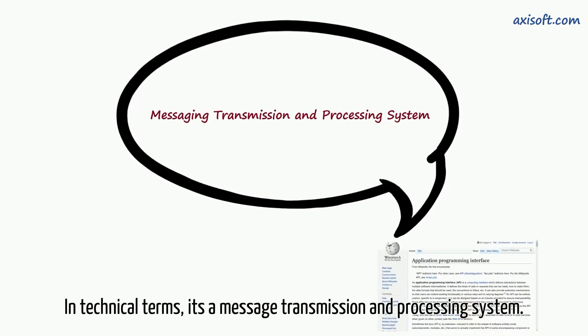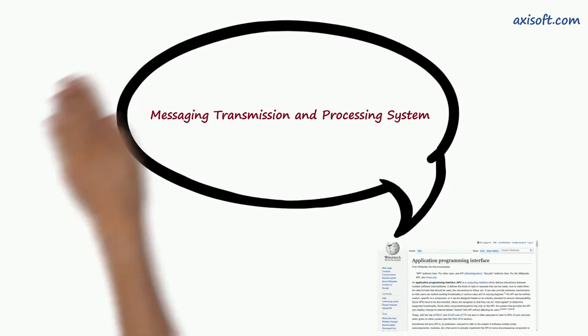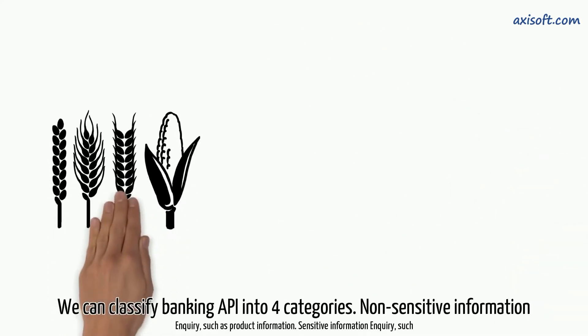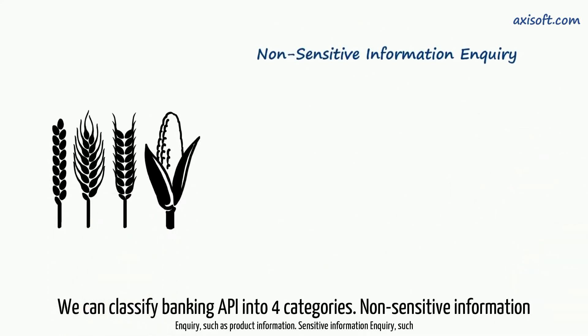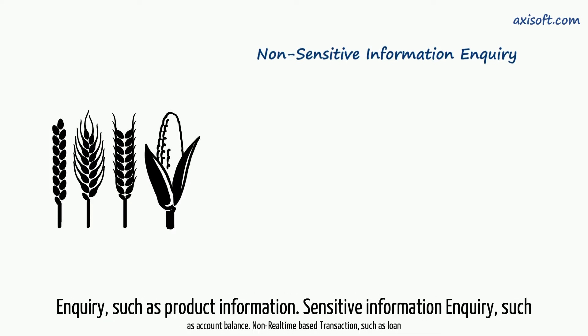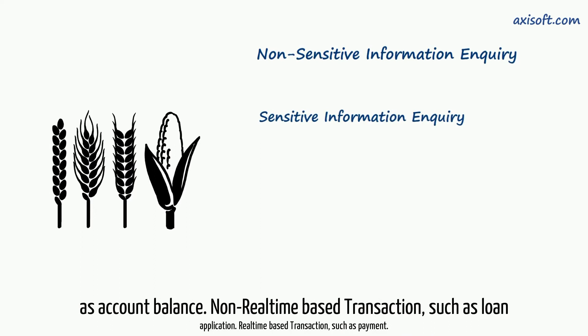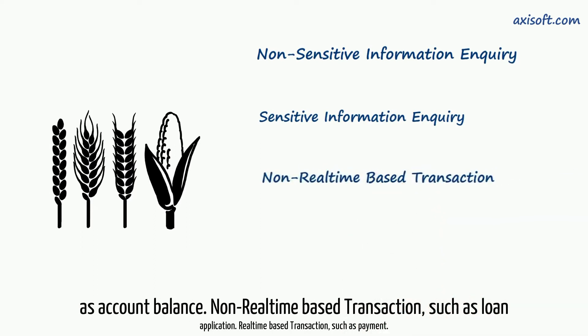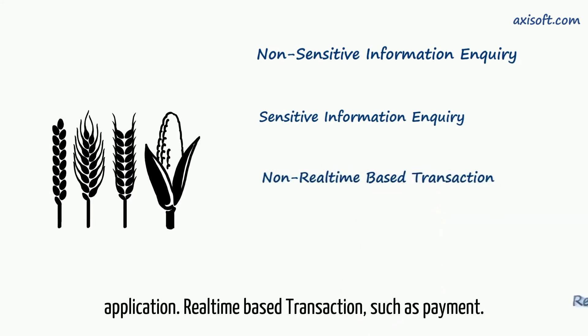In technical terms, it's a message transmission and processing system. We can classify banking API into four categories: non-sensitive information inquiry such as product information; sensitive information inquiry such as account balance; non-real-time based transactions such as loan applications; and real-time based transactions such as payment.